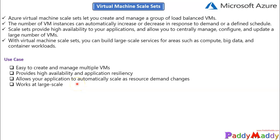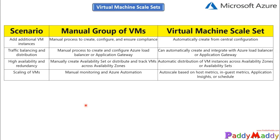Even so, 600 instances is still a huge number to spin up. Let's also look at a scenario-based comparison to clarify the difference between regular virtual machines and scale sets. If you want to add additional instances with regular VMs, you create them manually; with scale sets, it happens automatically via auto scaling. For traffic balancing and distribution, VMs require manual configuration of your Azure load balancer and application gateway, whereas scale sets handle this automatically — you simply integrate your load balancer or application gateway and it does the job.